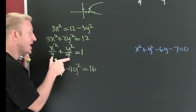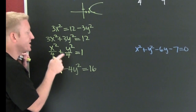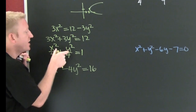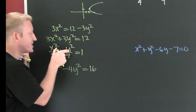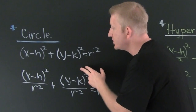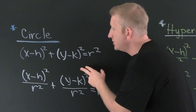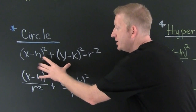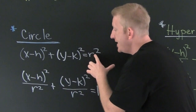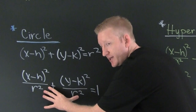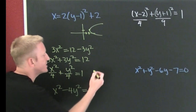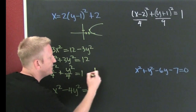Are my denominators the same? Yes. Do I have a sum? Yes. Are both variables squared? Yes. Which one is that? The circle's the one where both variables are squared, there's a sum, and both denominators are the same. It's a circle.